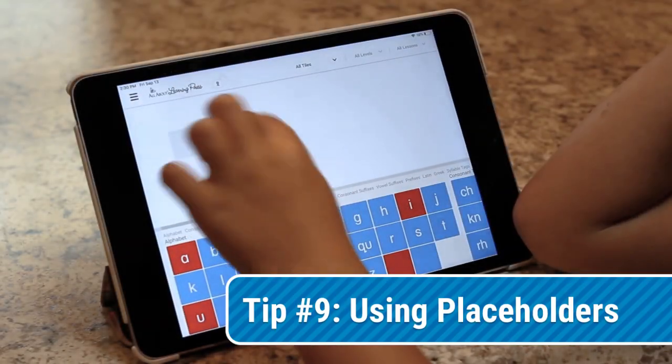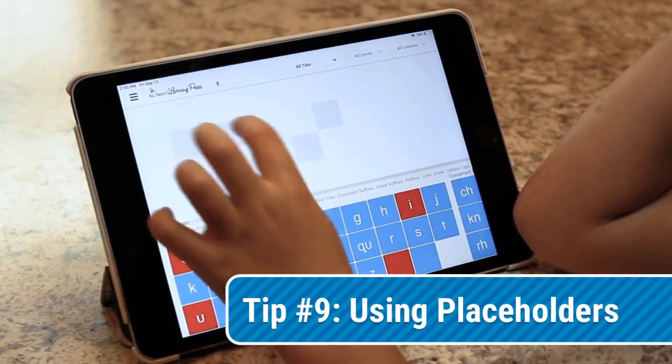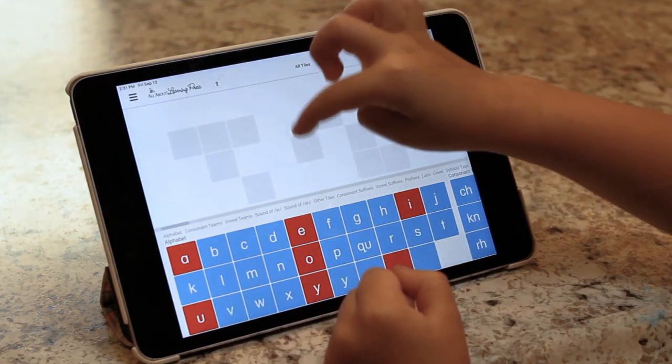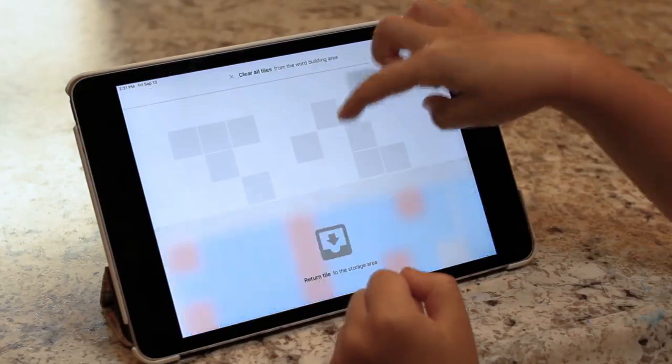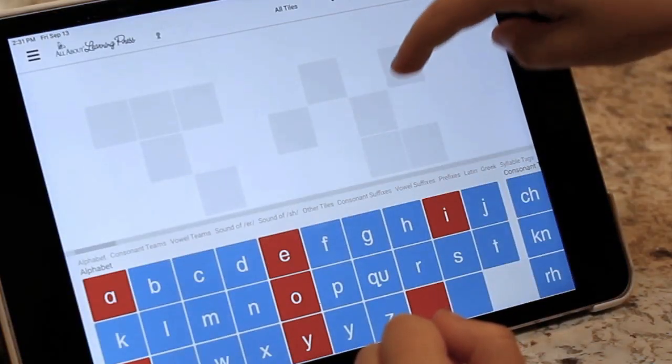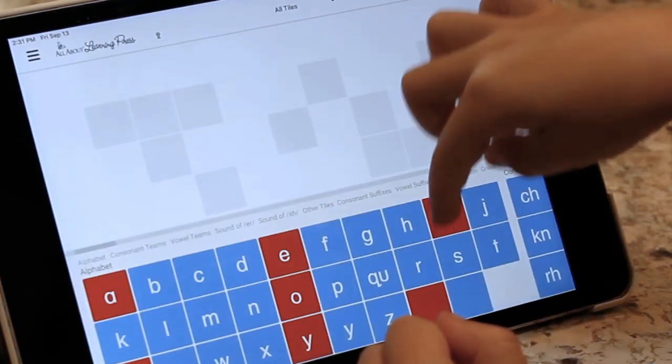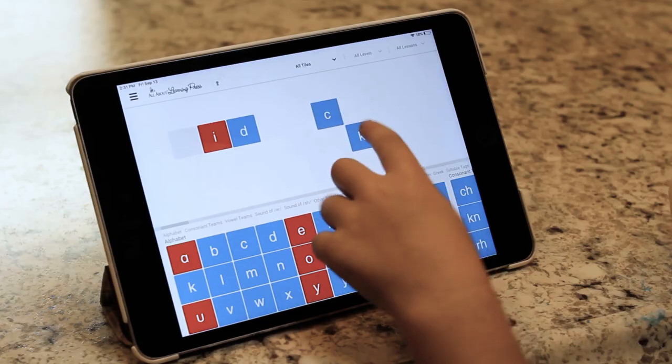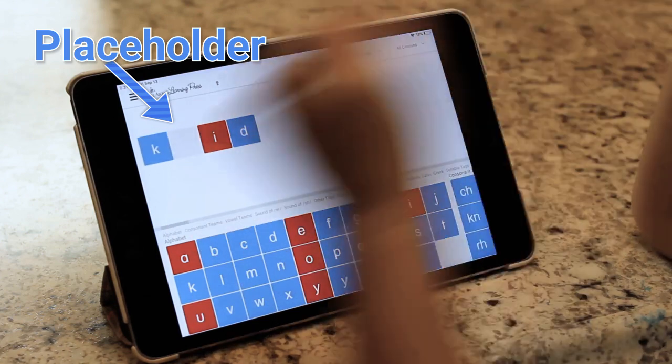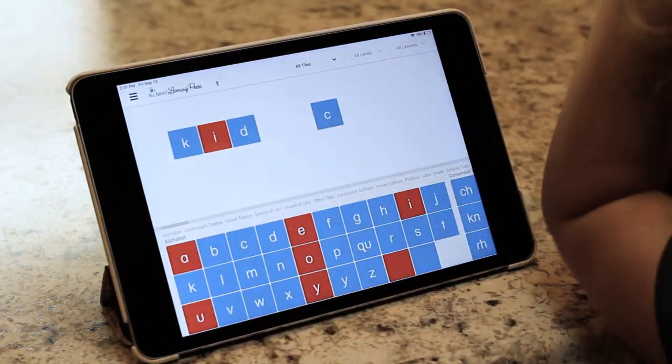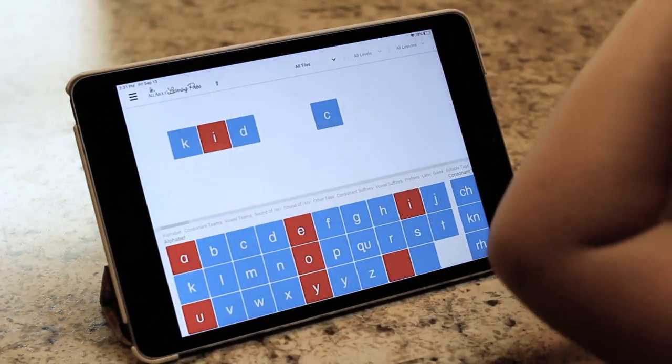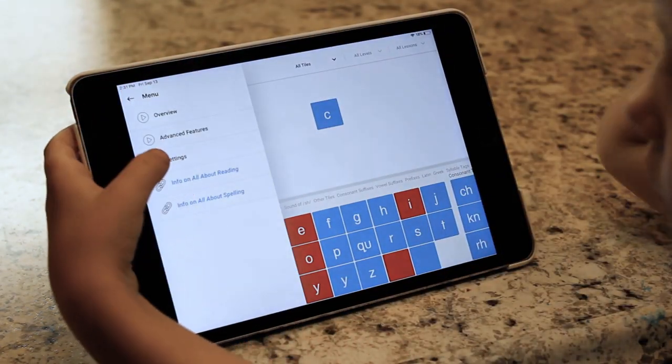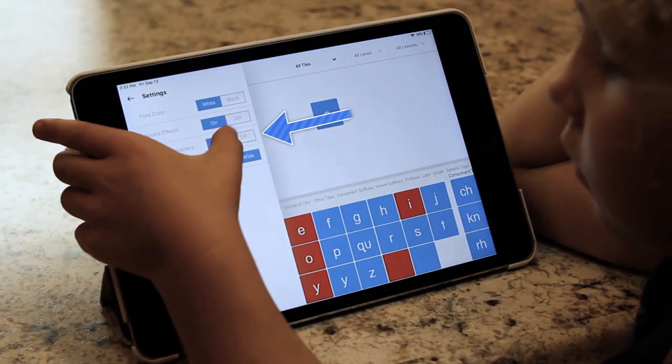Have you ever noticed the light gray boxes that appear when you tap on the word building area? These boxes are placeholders and can be moved around just like a regular tile. They're also known as Elkonin boxes and they can help children segment words into their individual sounds. These placeholders can be used in various situations. One way to use them is with lessons where your child must pick a certain tile to use, such as whether to use a C or a K at the beginning of a word. However, if your child finds these boxes frustrating, you can always turn them off in the settings menu.